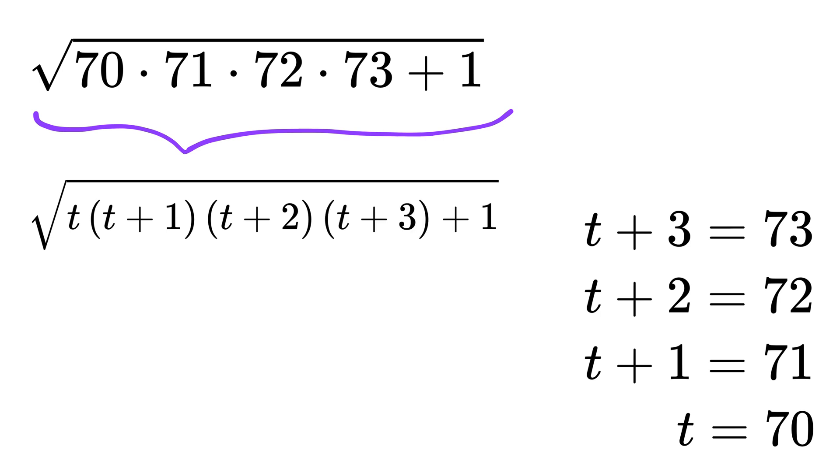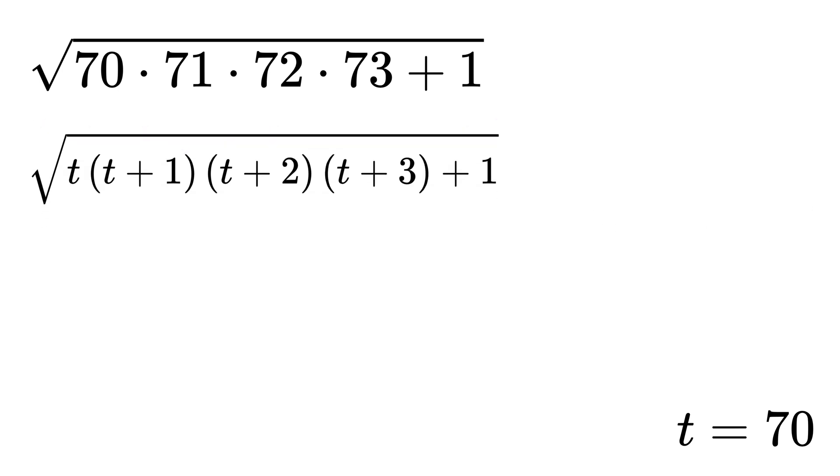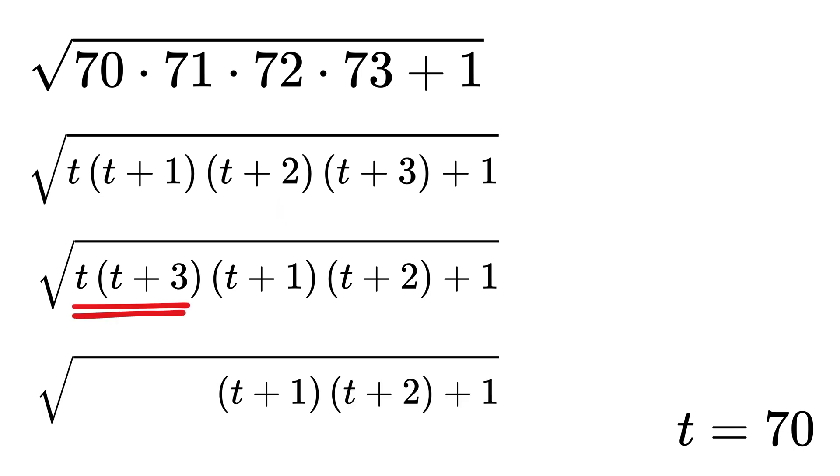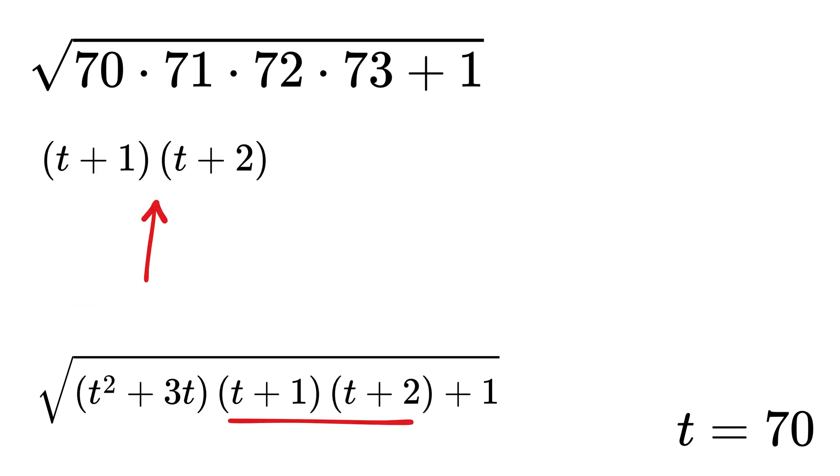Now here comes the clever trick. We can take this t and t plus 3 together and t plus 1 and t plus 2 together and multiply. So first group is t times t plus 3, multiply them to get t squared plus 3t. Second group is t plus 1 times t plus 2.